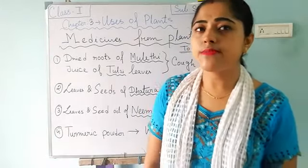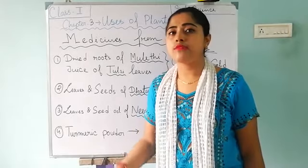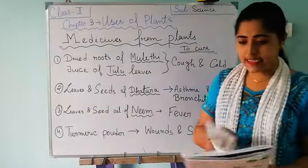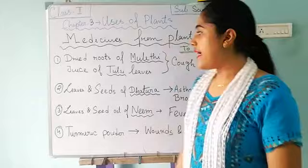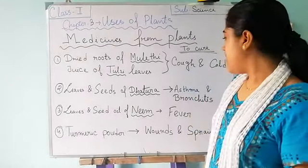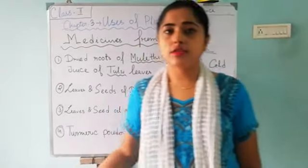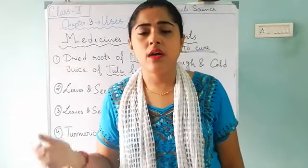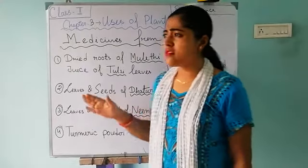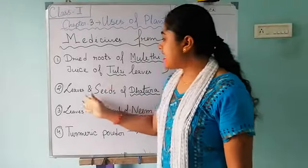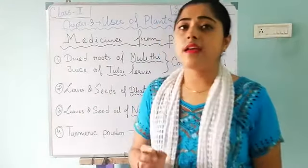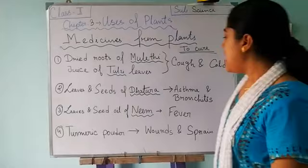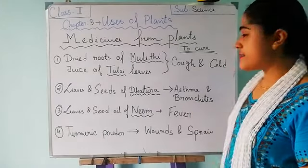Tulsi trees are very helpful because we can see them in every house. Next, option 2 — you can see it on page number 16 in your book. The leaves and seeds of dhultura — from the leaves and seeds of the dhultura tree, we can make medicines. Those leaves and seeds are used to make medicines.